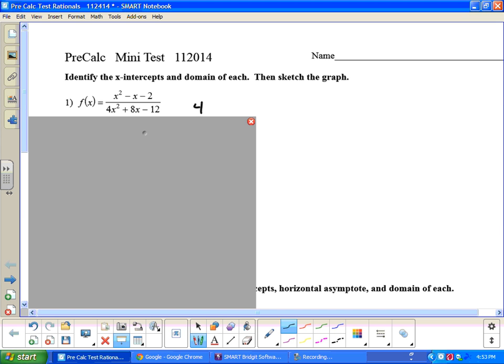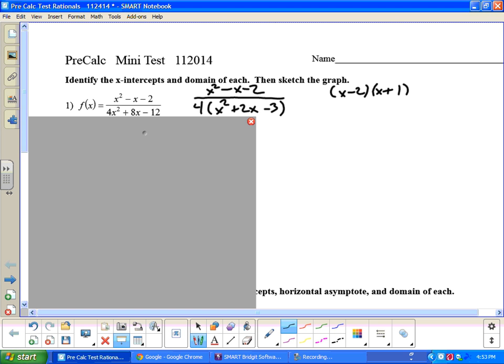The first one here is f of x equals x squared minus x minus 2 over 4x squared plus 8x minus 12. I'm going to factor first to see if 4 is common on the bottom. I'm going to factor that out and get this. And I see this top is either down two trinomials that factor.